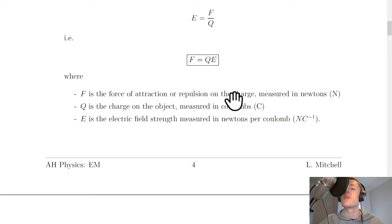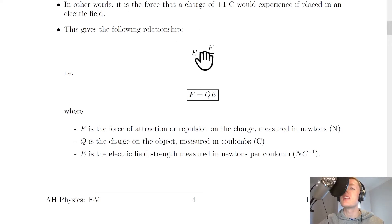It tells us what each of these things means. F is the force of attraction or repulsion on the charge measured in newtons. Q is the charge on the object measured in Coulombs. E is the electric field strength measured in newtons per Coulomb, NC to the minus one. That comes from force in newtons divided by charge in Coulombs.